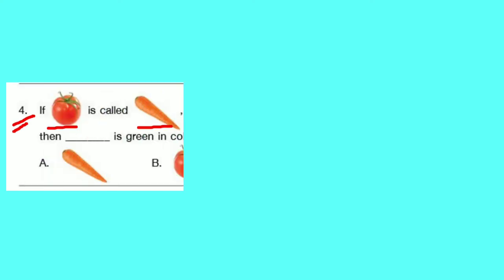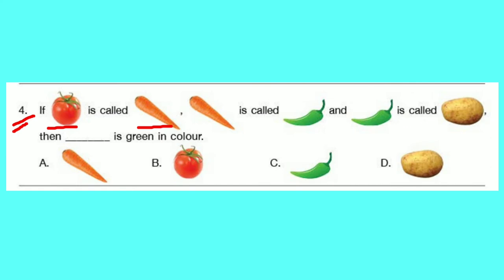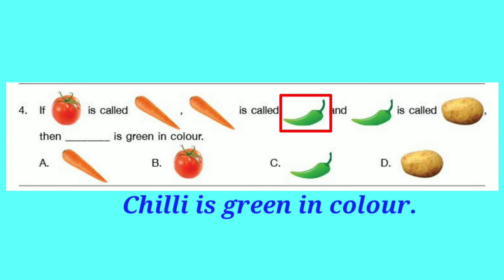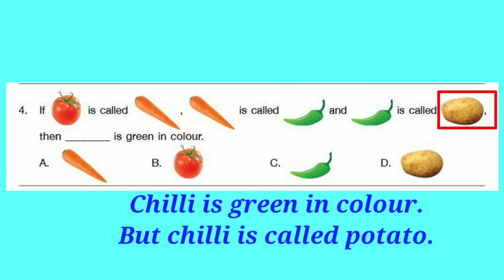Question number 4: If a tomato is called carrot, a carrot is called chili, and a chili is called potato, then what is green in color? Clearly, chili is green in color. But here, chili is called potato. So the correct option is D — potato.